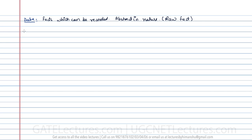Now when you say something called information — information is created using data. You can say information can be defined as data with some added meaning. That means you should be able to acquire some kind of meaning from the data; that is called information.